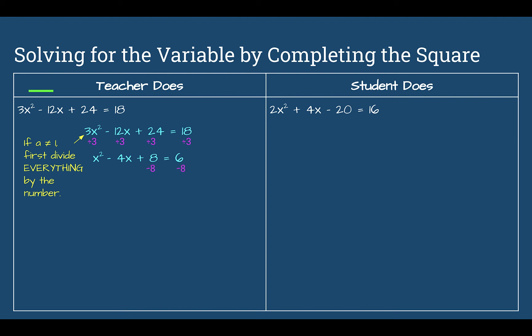Subtract 8 from both sides so the constant is on the right: x squared minus 4x plus something equals negative 2 plus that same thing. Half of 4 is 2, and 2 to the second power is 4, so add 4 to both sides. Factor: x minus 2 times x minus 2 equals 2, so x minus 2 squared equals 2. Take the square root: x minus 2 equals the square root of 2. Add 2 to both sides: 2 plus or minus the square root of 2.